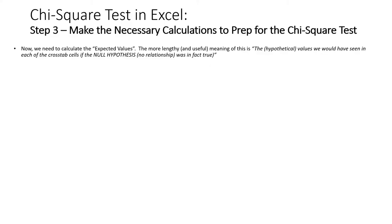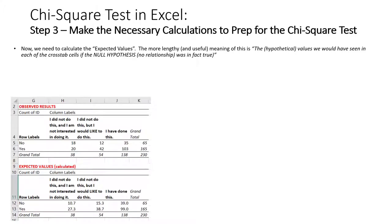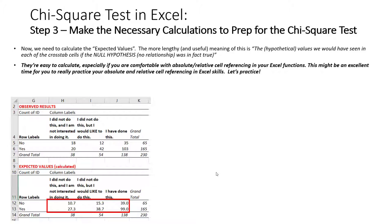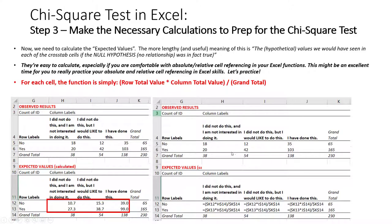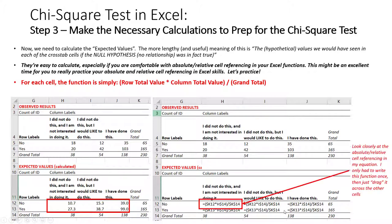Now we're ready to calculate those expected values. The expected values are the hypothetical values that we would see in our crosstab if the null hypothesis was true — meaning there is truly no relationship whatsoever. We actually know what numbers we would see if these two variables were independent of one another. It's actually pretty easy to calculate these values, especially if we know how to use absolute and relative cell referencing. The way we calculate each value in the expected values crosstab is simply: take the row total times the column total and divide by the grand total. Let's hop over into Excel and build out these expected value functions.